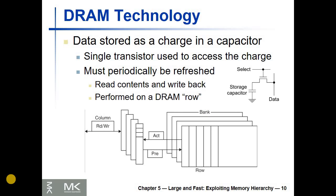This recording is about DRAM technology. DRAM, or dynamic RAM, is a dense memory technology. Data is stored as a charge in a capacitor, and one transistor is used to access this charge on the capacitor. The cell is made of one capacitor and one transistor. There is a select line that controls opening and closing the transistor, and the data line is used to read or write what is stored on the capacitor.